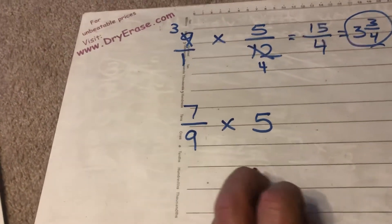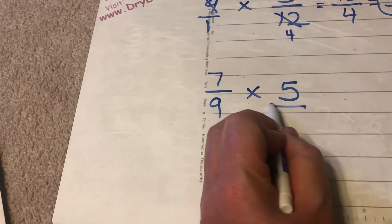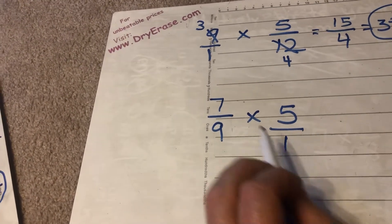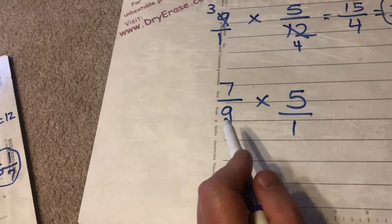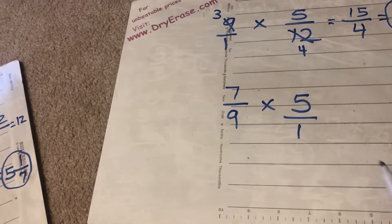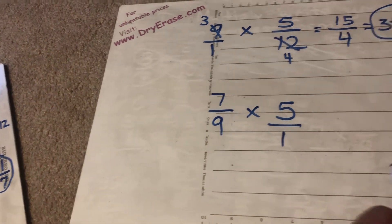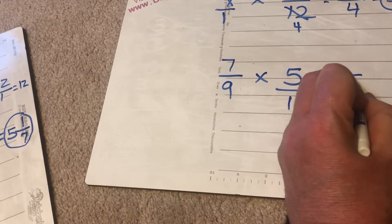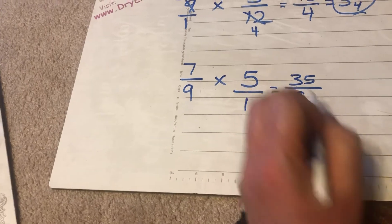7 ninths times 5. Well once again make everything a fraction. 5 becomes 5 over 1. I cannot cross check a 1 and a 7. Nothing can go into both 1 and 7 except 1. I cannot cross check a 5 and a 9. Nothing can go into both 5 and 9 other than 1. So now it's time to multiply. 7 times 5 is 35. 9 times 1 I believe is 9.